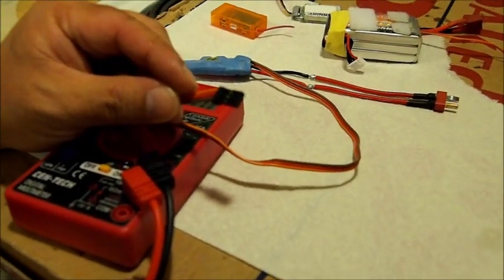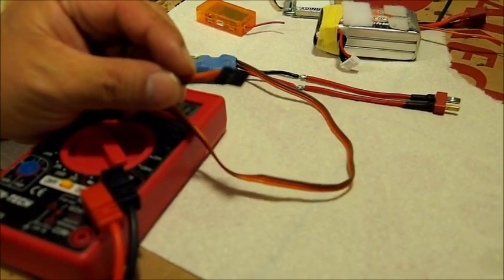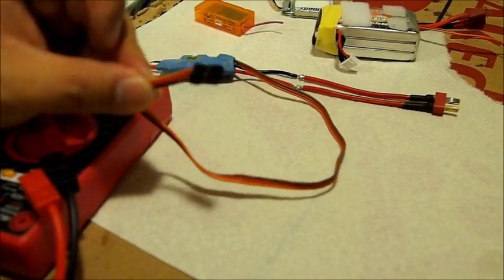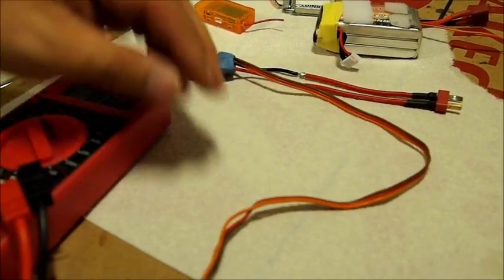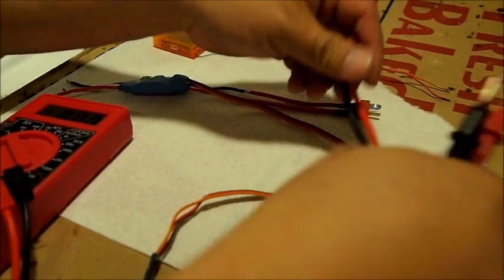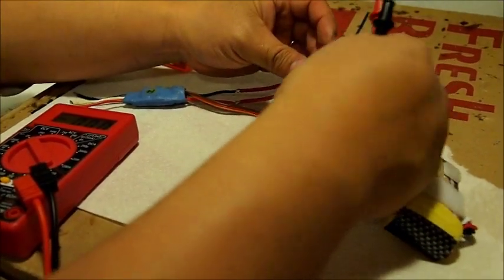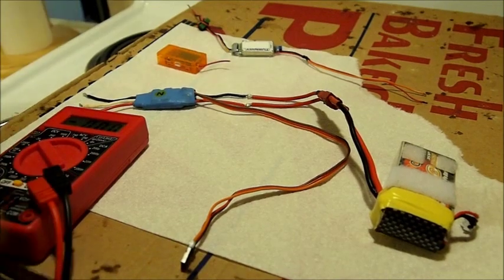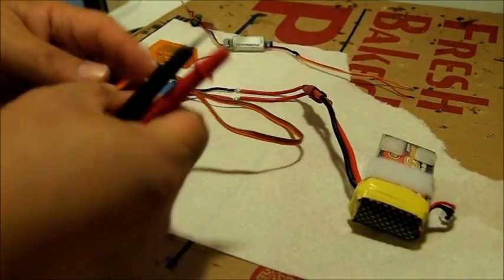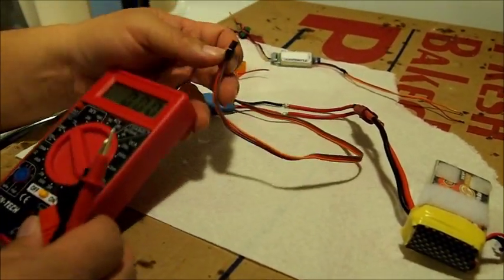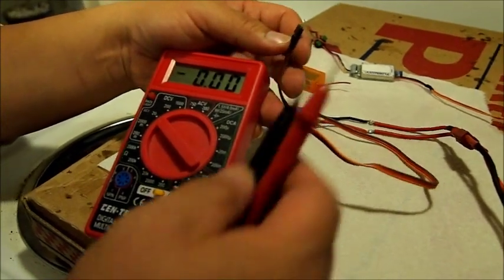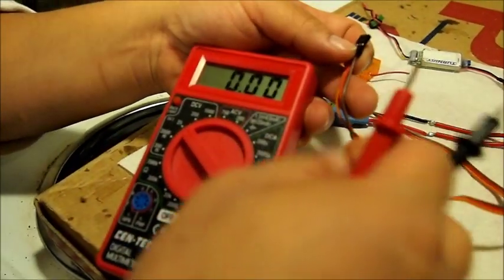If you aren't sure what's positive and what's negative, like this one where the color is kind of wacky, go and plug in your battery to your ESC and with your voltmeter, find out what's positive and what's negative.